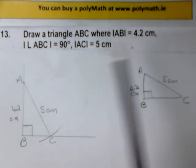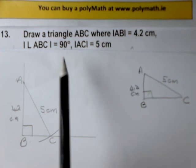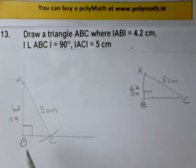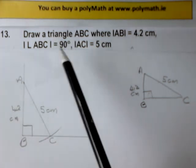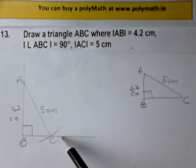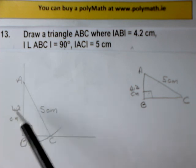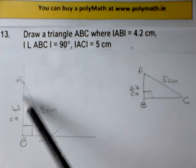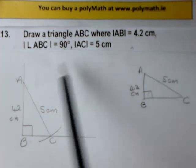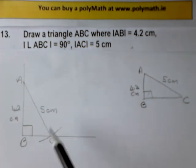Now I'll go back to the written information to see that I've done everything right, and if I've made a mistake it should show up now. The triangle is called ABC, the length of AB is 4.2 centimeters, the angle ABC is 90 degrees, and the length of AC is 5 centimeters — so I did everything as was asked.